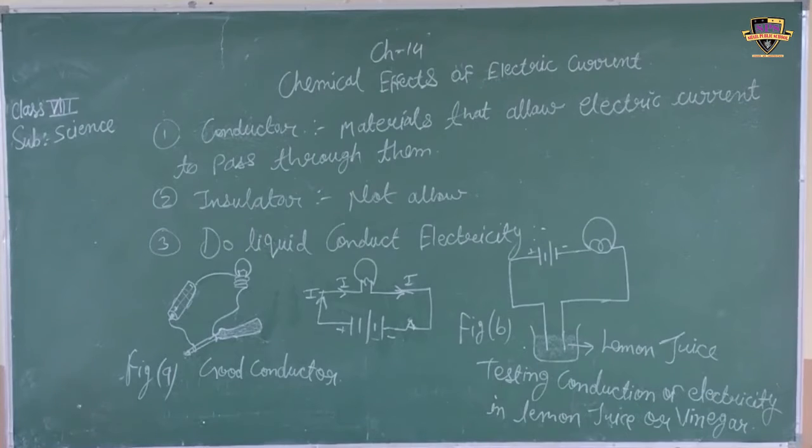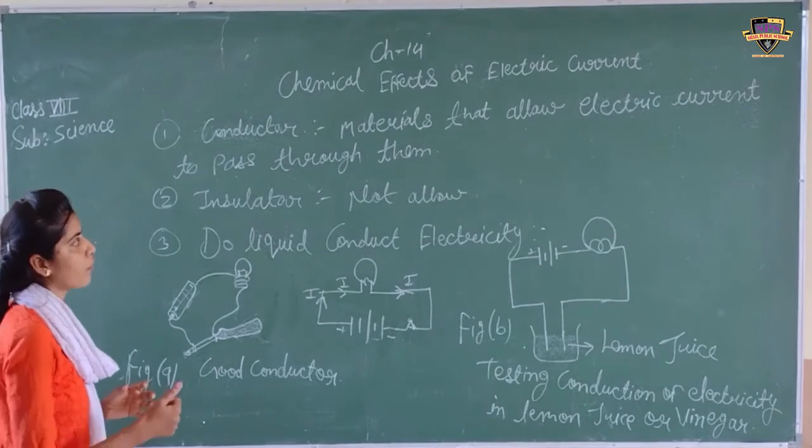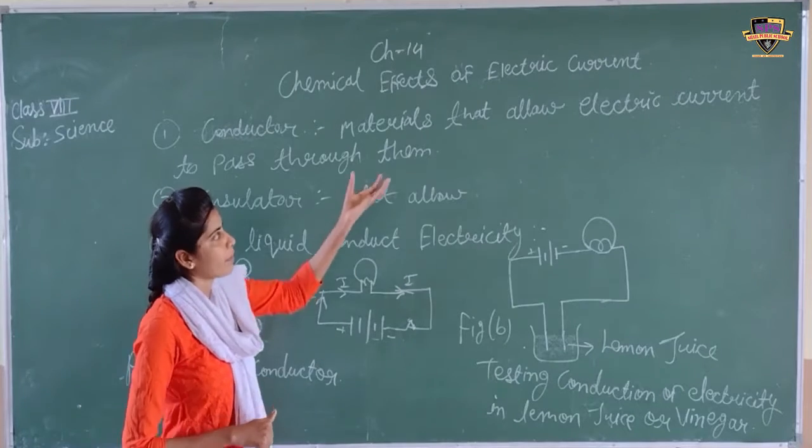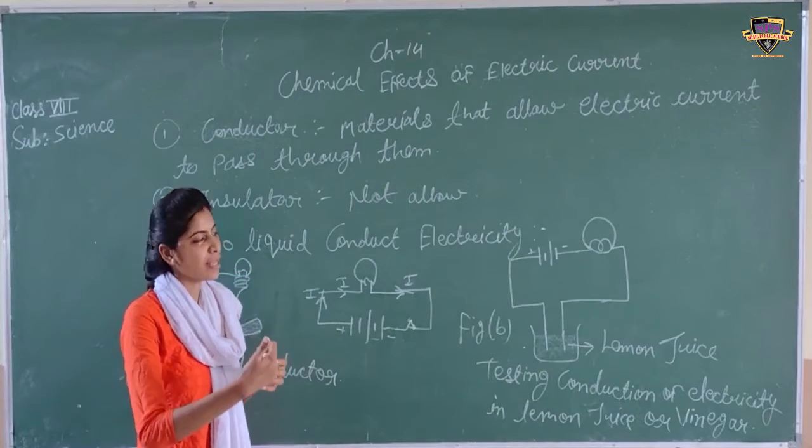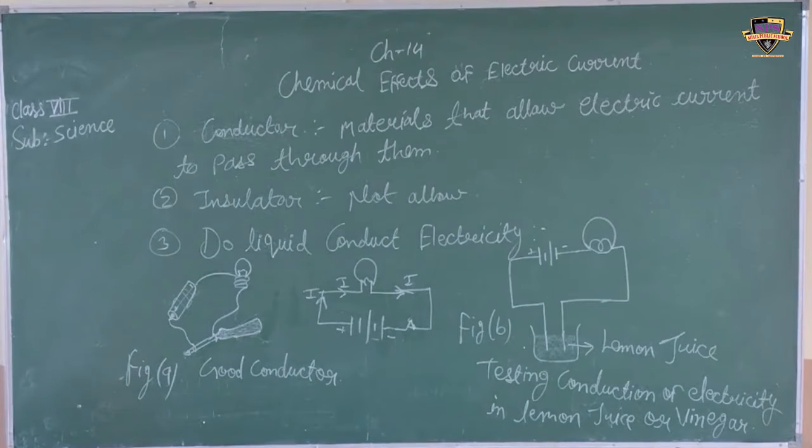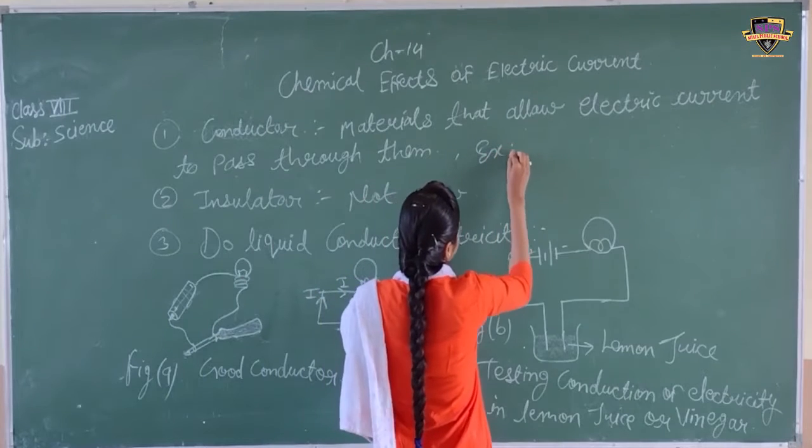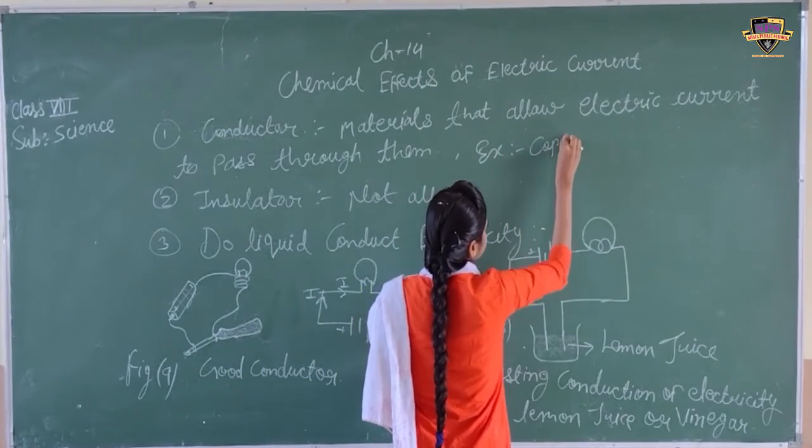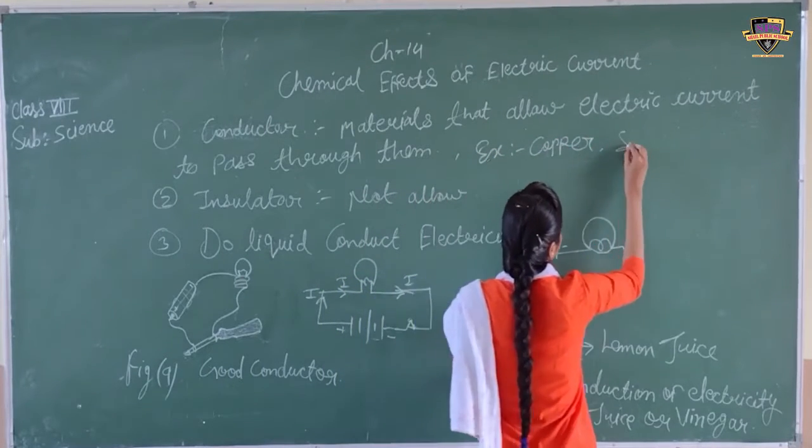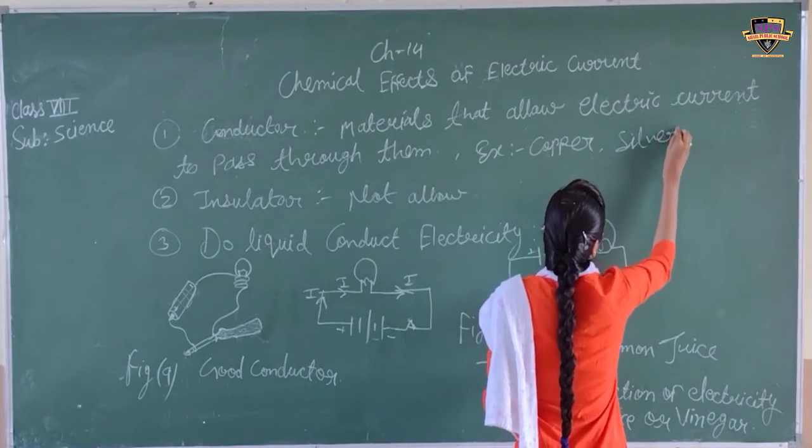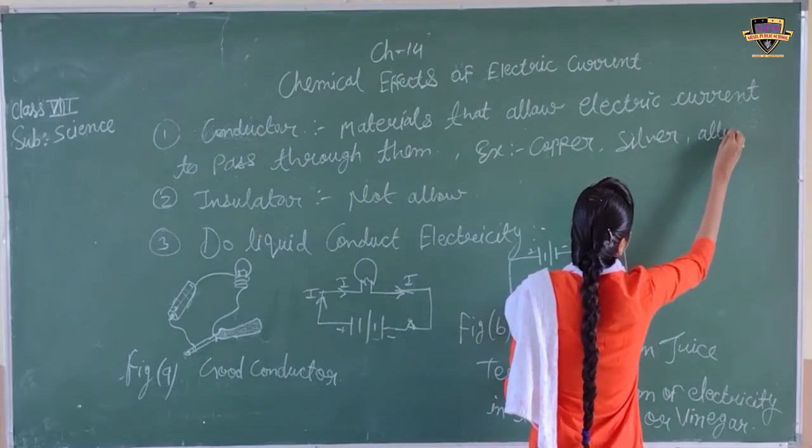What is the conductor? Conductors are like materials through which electrical current can pass. The electrical current is passed through them. For example, we can use copper, silver, and aluminum.